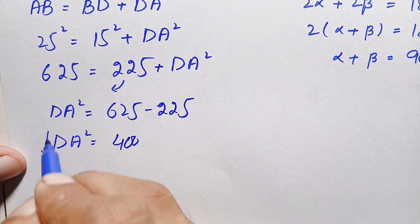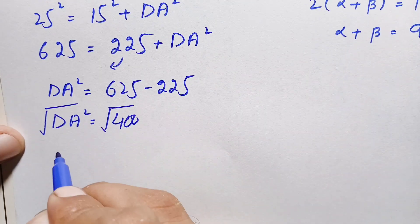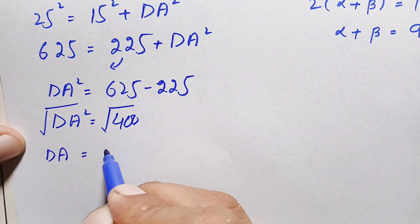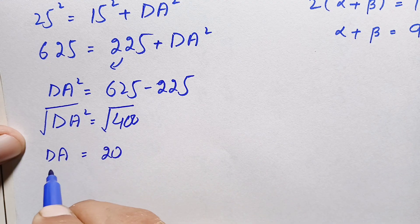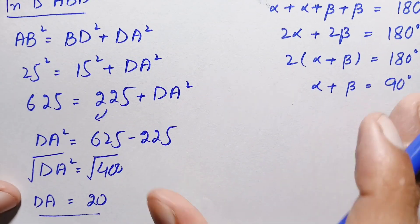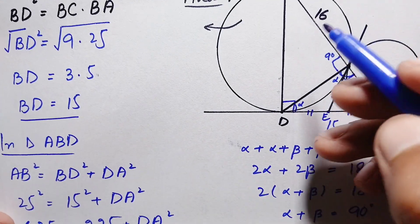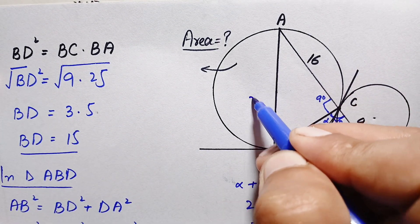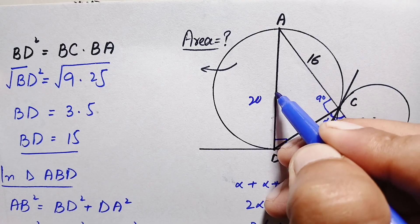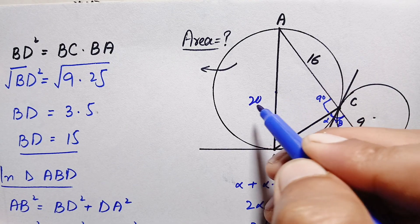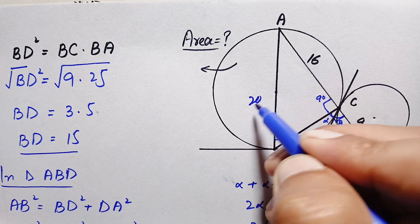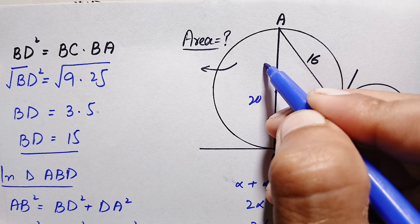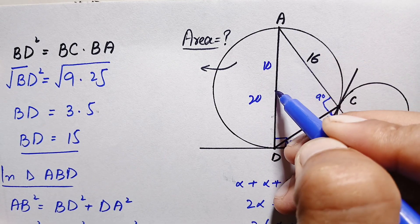Taking the square root of both sides, DA = √400 = 20 units. So the diameter of this circle is 20 units. Since the radius is half the diameter, the radius = 20 ÷ 2 = 10 units.